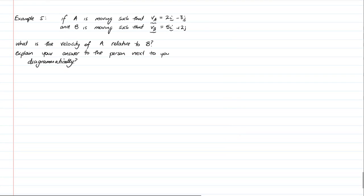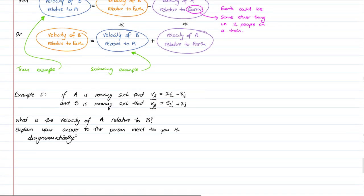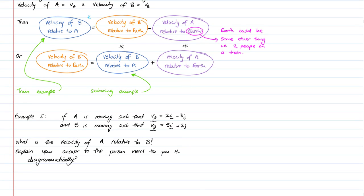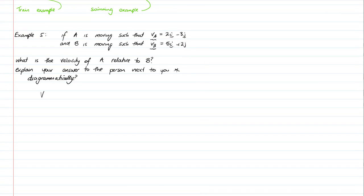So, let's have a look at a couple of examples. Example 5: If A is moving such that the velocity of A equals that, and the velocity of B equals this, what is the velocity of A relative to B? The velocity of A relative to B is equal to the velocity of A minus the velocity of B, which is 2i minus 3j minus the velocity of B, which is 5i plus 2j. Put that in brackets in particular, just to make sure I get that right. And it comes out as -3i minus 5j.